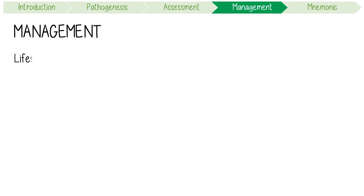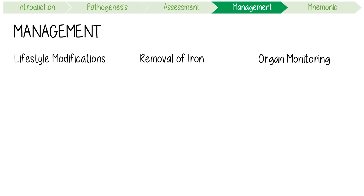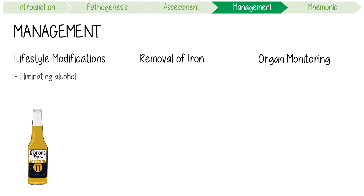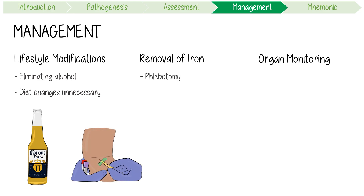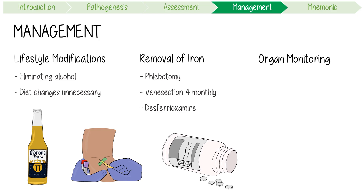Management revolves around lifestyle modification, removal of excess body iron, and organ damage monitoring. Lifestyle modification includes eliminating alcohol consumption, as it increases cirrhosis risk by nearly tenfold; dietary adjustments are unnecessary. Removal of excess iron is best done via regular phlebotomy — an initial course of one or two venous sections per week until excess iron stores are removed, then maintenance of one venous section every four months. An alternative is desferoxamine, a chelating agent, but this is costly and rarely needed in practice.